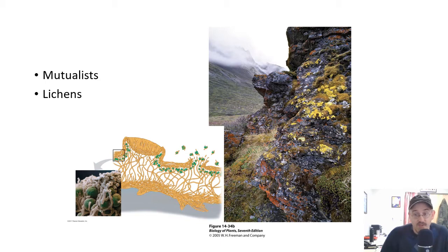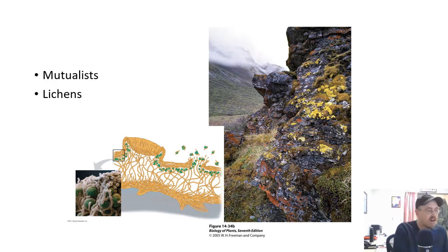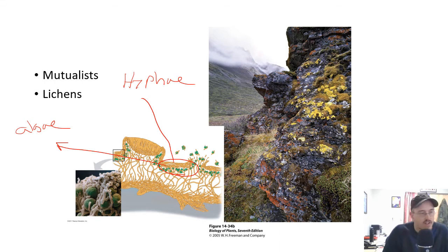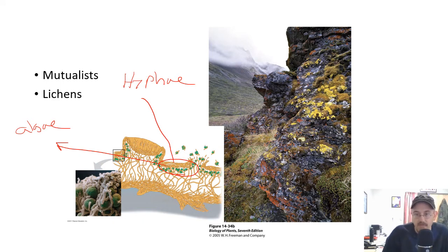Another group of fungi you might encounter are mutualists, meaning both members live together and both benefit — and that's a lichen. Lichens, like we see on this rock, grow all over the trees here on campus. If we zoom in on them, they consist of fungal hyphae and this green material, which is algae or sometimes cyanobacteria — a photosynthetic symbiont. The hyphae provide a place to live and hold water, and the algae photosynthesize and feed the fungus. A lichen is not really an organism; it's a community of at least two kinds of organisms.